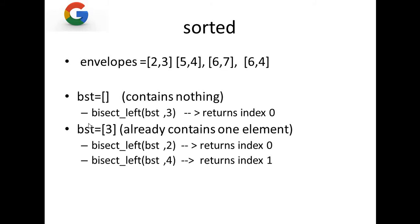For example, let's call the list BST. bisect_left(BST, 3) on an empty list returns index 0 — if you were to place 3, it would go at position zero. Importantly, calling bisect_left does not actually insert the element into the list; it just calculates the position where the element would be inserted. So if BST already has [4] and you call bisect_left(BST, 3), it still returns 0, since 3 would be placed before 4.